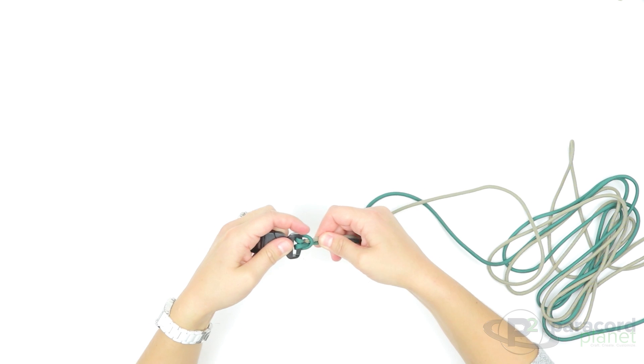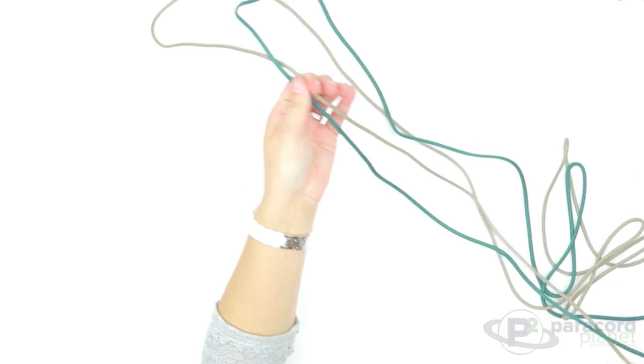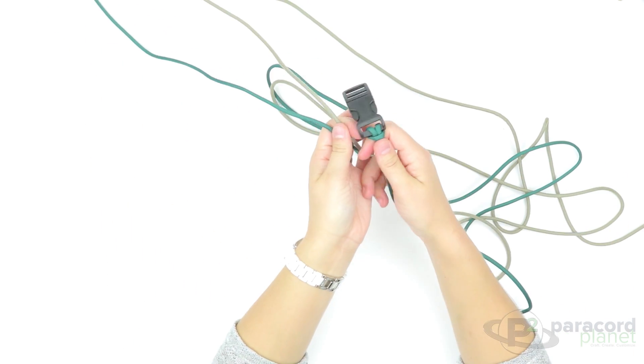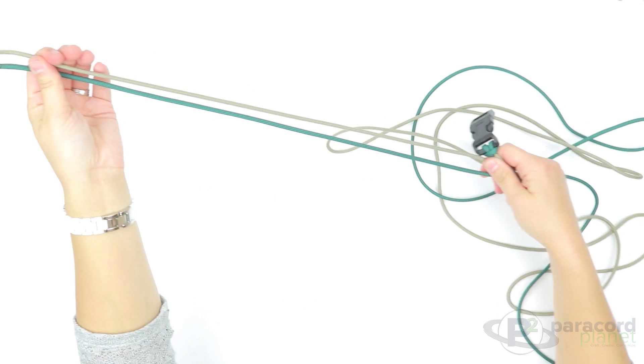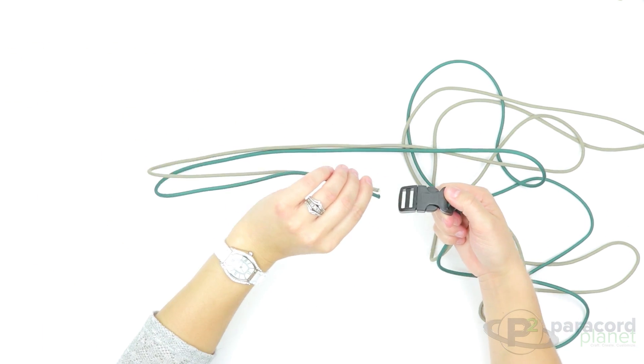Then you'll go to the ends, making sure not to cross any of your paracord. Then you'll go in through the top of the other end.